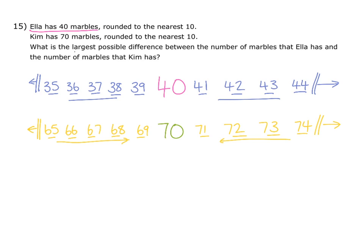We're asked to give the largest possible difference between the number of marbles that Ella has and the number of marbles that Kim has. To do this, we should choose the lowest number of marbles that Ella could possibly have, and the highest number of marbles that Kim could possibly have. This would give us the largest possible difference, as we are picking a number right at the bottom of Ella's possible range and right at the top of Kim's possible number of marbles. So we now need to find the difference between 35 and 74, and this will be our answer.